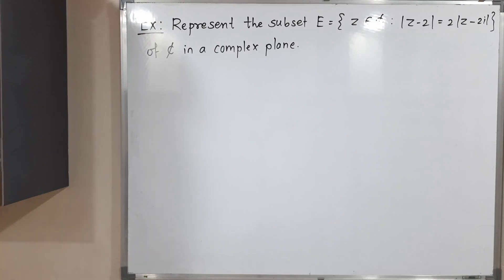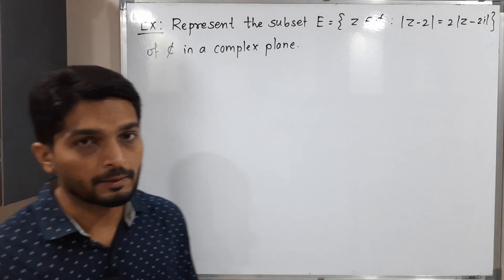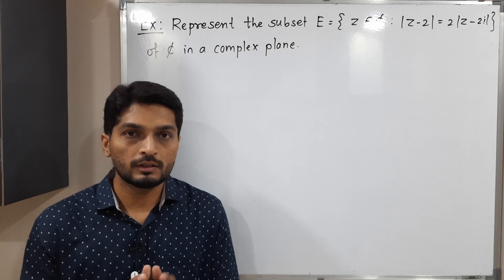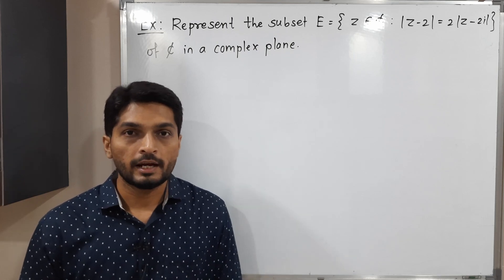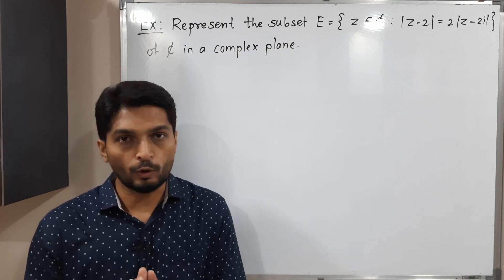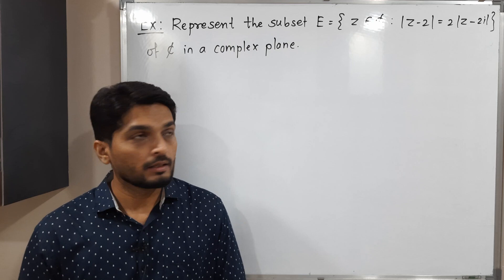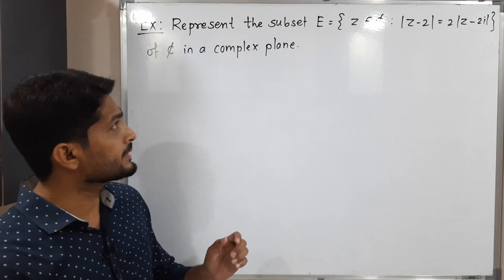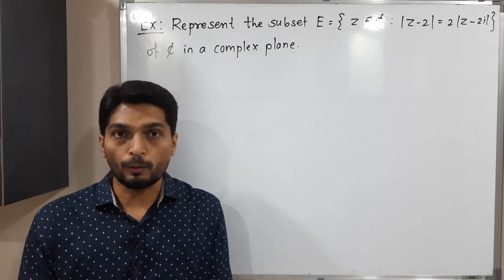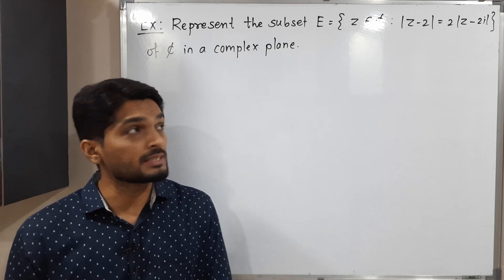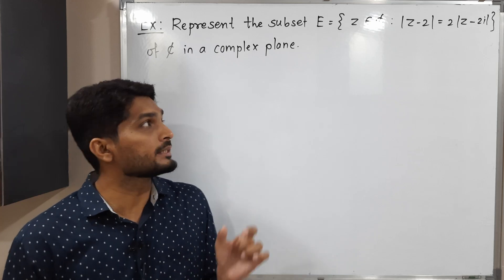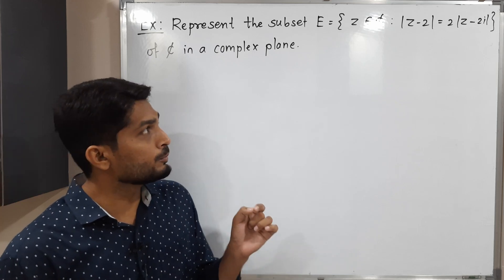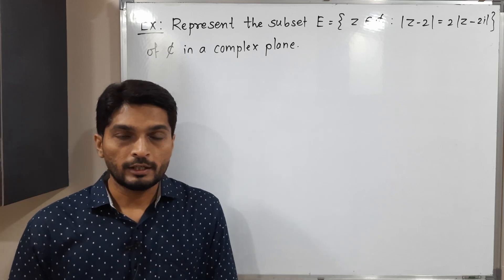Hi everyone. In this video we are going to discuss this set, which is a subset of C, the set of complex numbers, and we are going to represent it in the complex plane. Set E is a collection of all complex numbers which satisfy the condition: mod Z minus 2 is equal to 2 mod Z minus 2i.